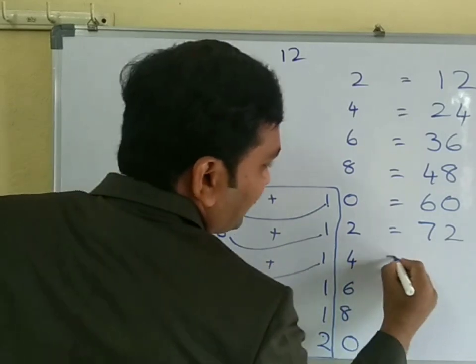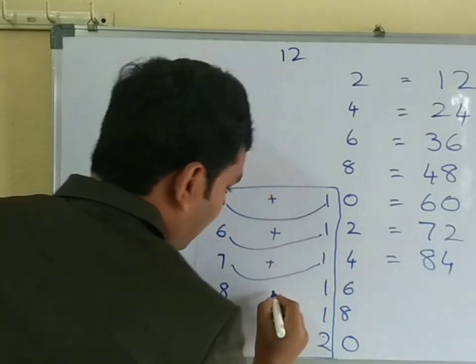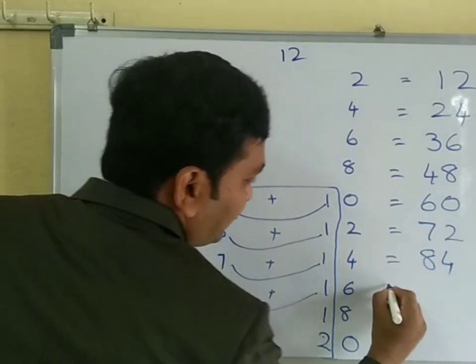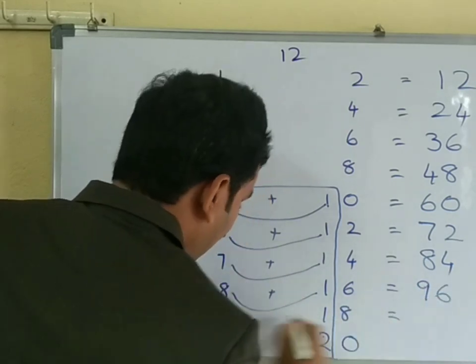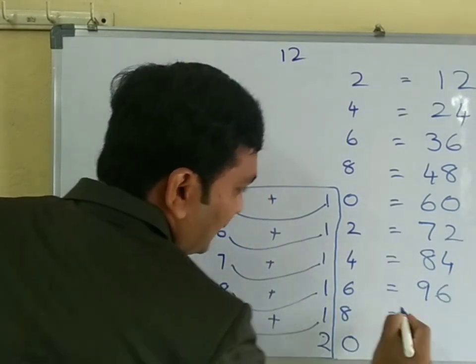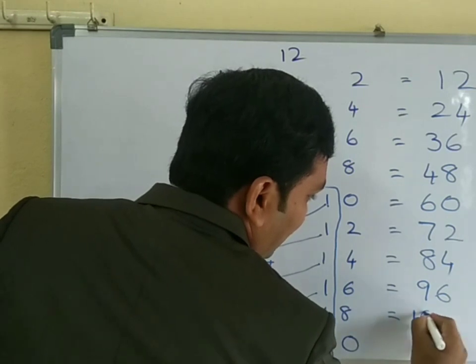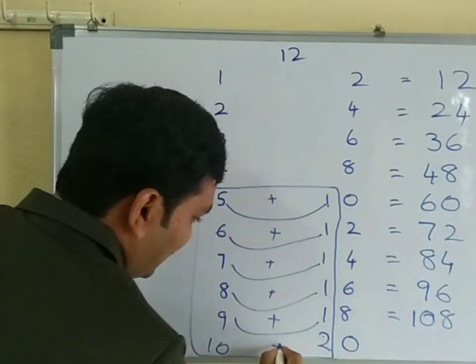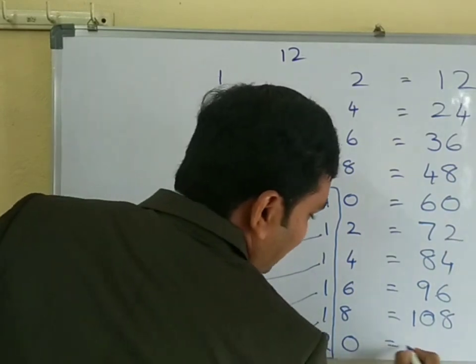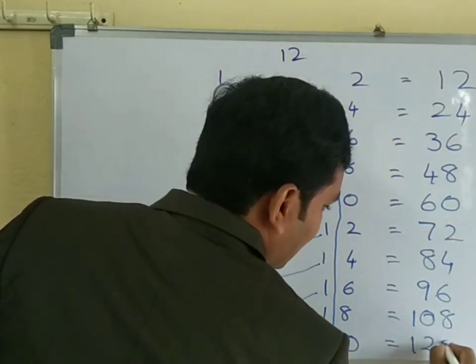7 plus 1, 8, 4. 8 plus 1, 9, 6. 9 plus 1 is 10, 8. Here, 10 plus 2 is 12, 0.